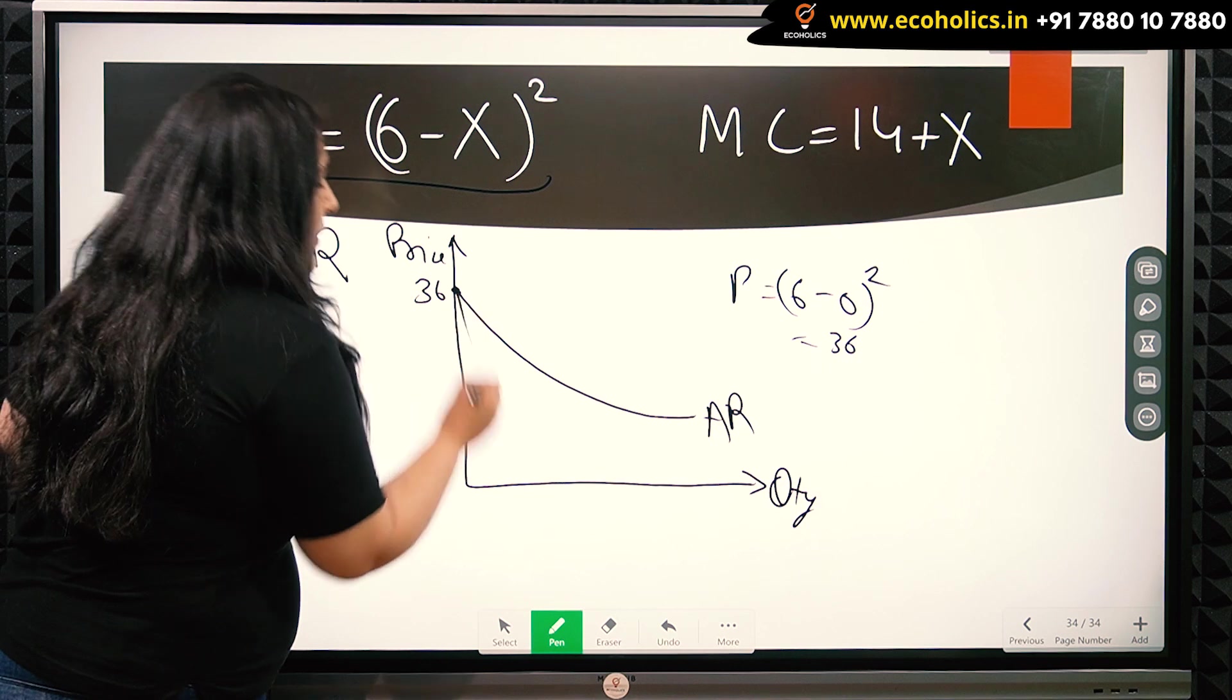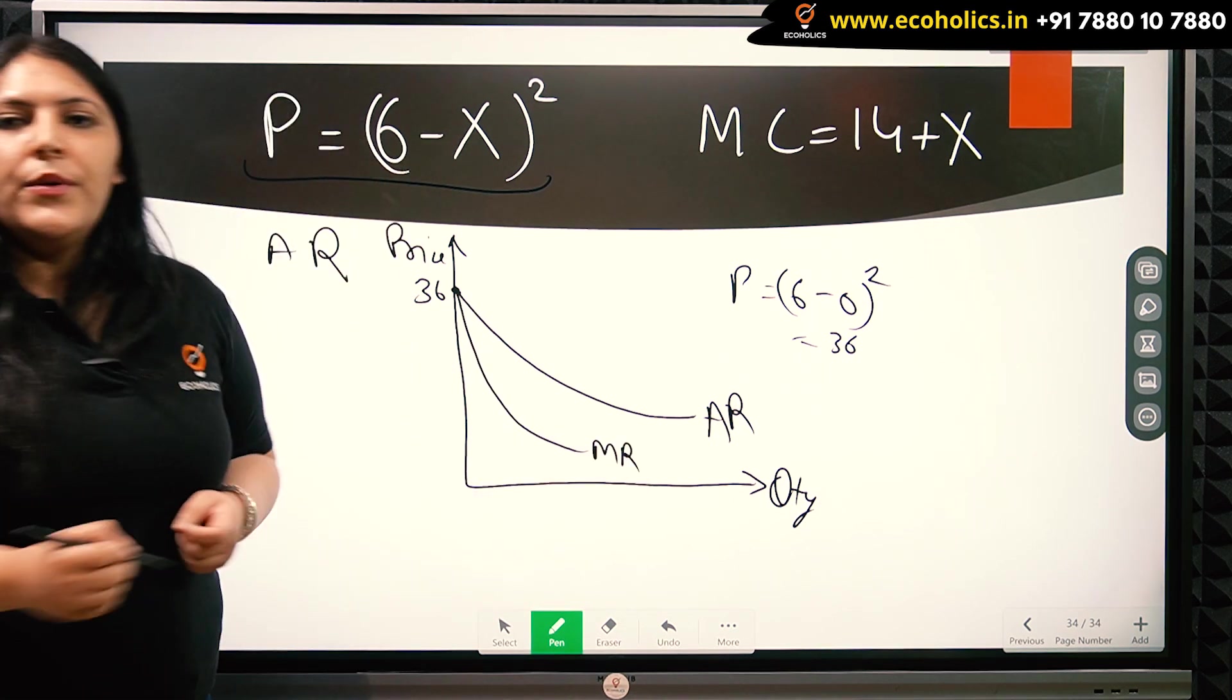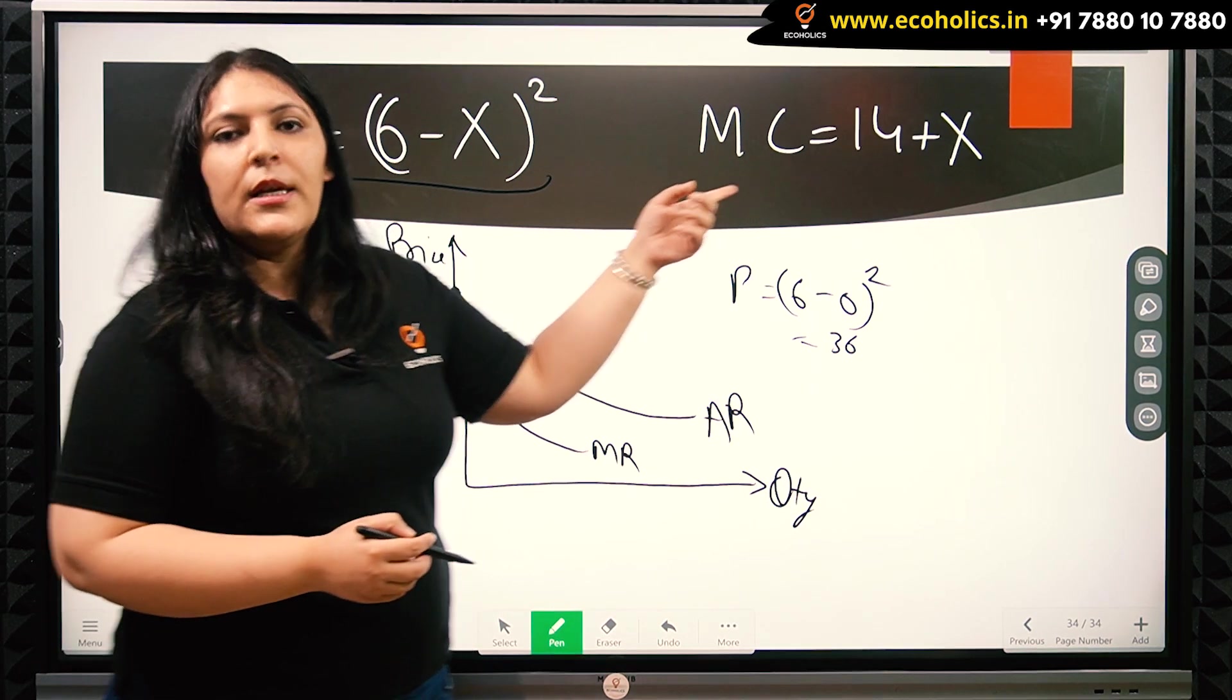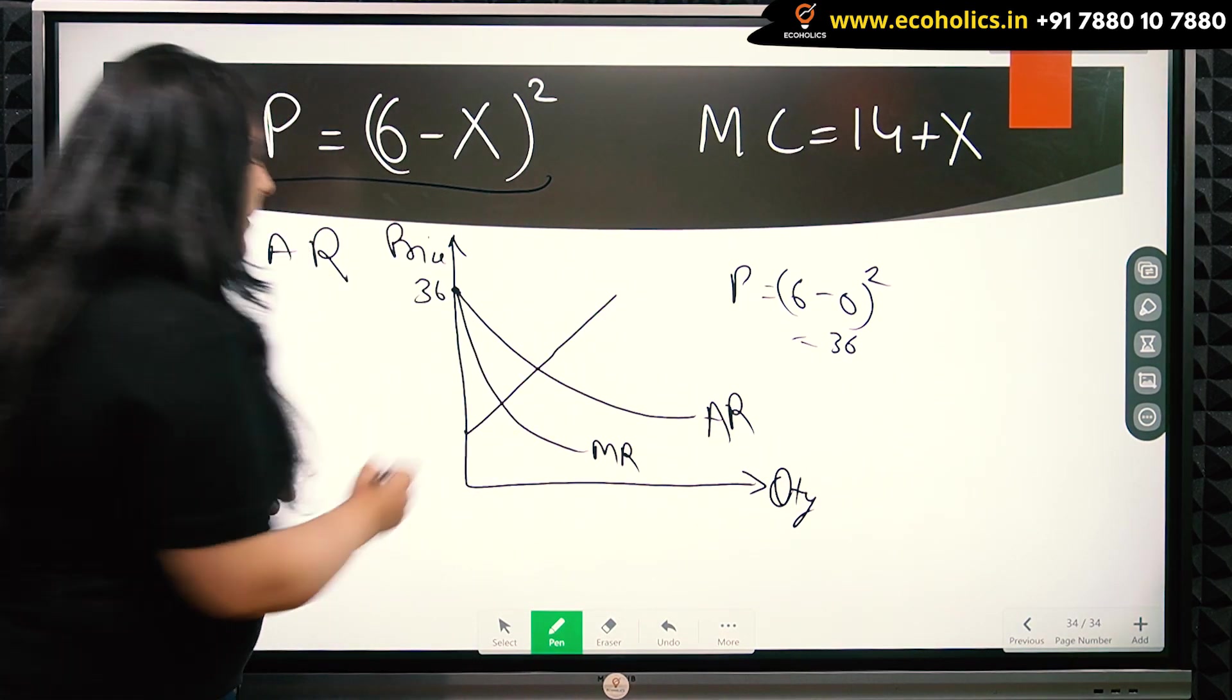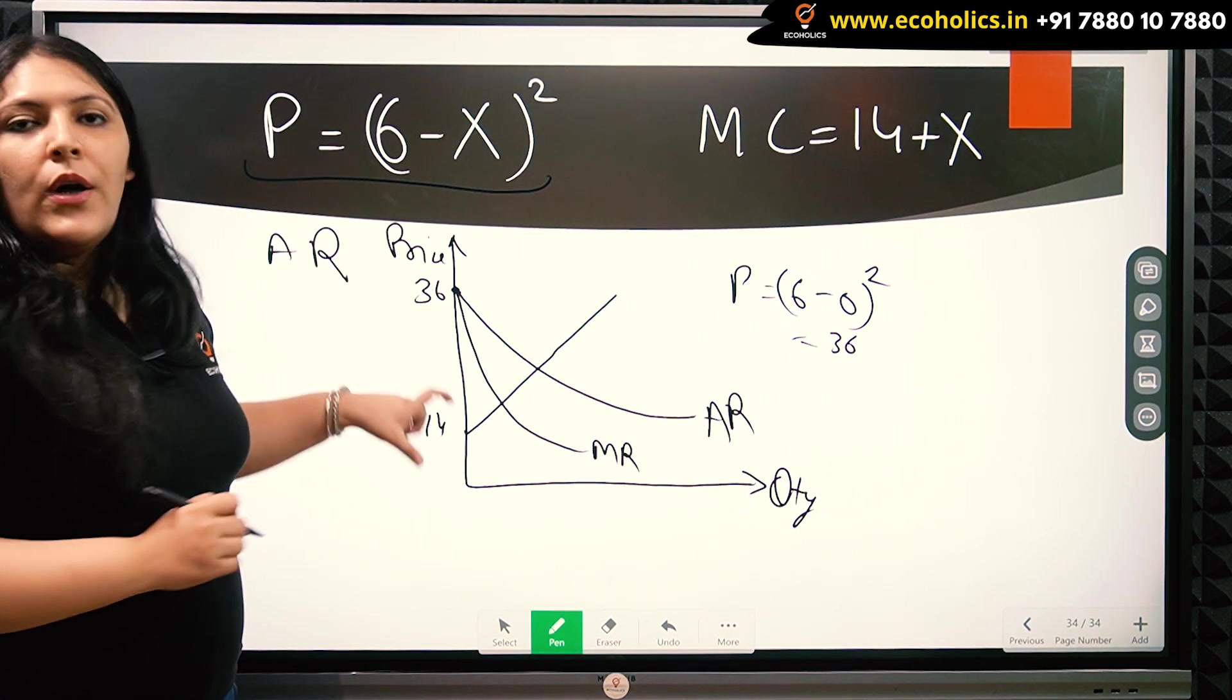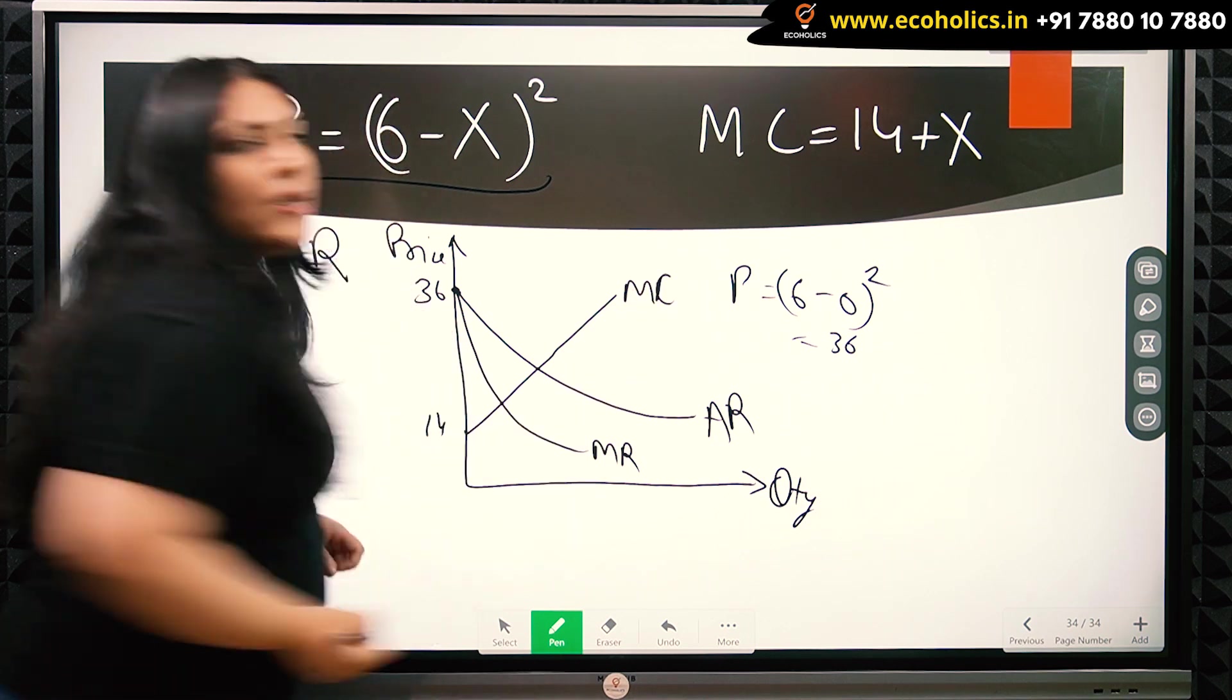We can also mark a similarly sloped marginal revenue curve. Now we've been given the marginal cost: 14 + x represents a straight line. So we can mark the same here, wherein 14 will be the intercept on the y-axis and we get this upward sloping marginal cost curve.